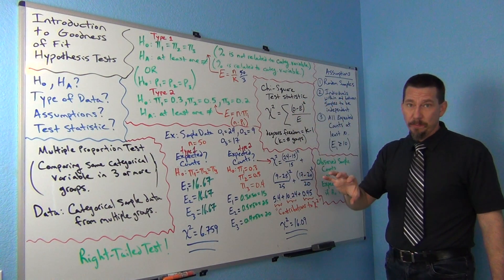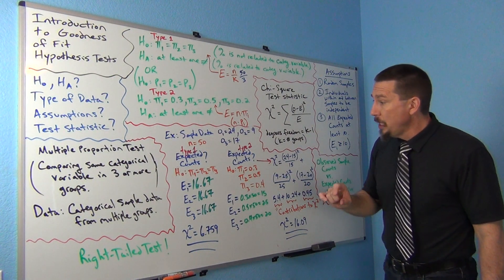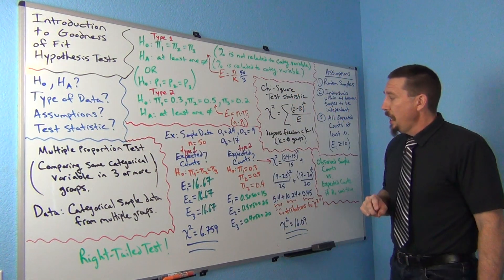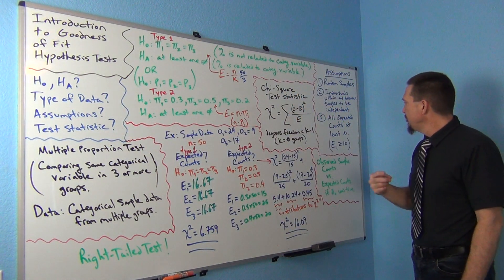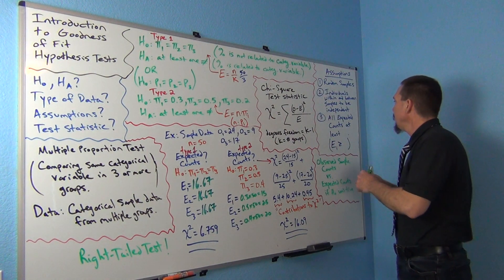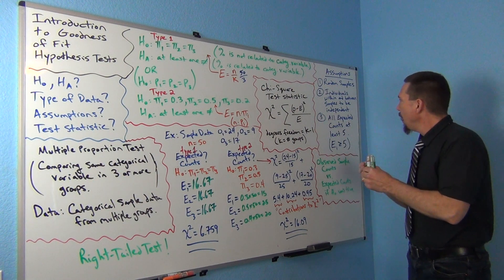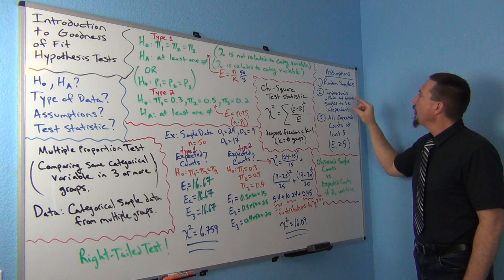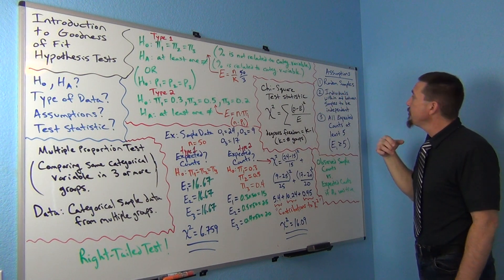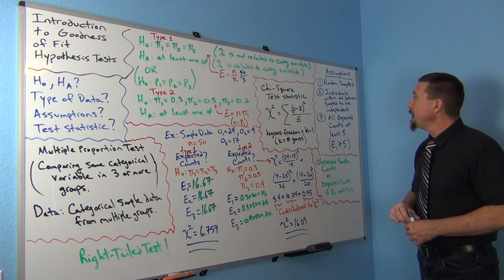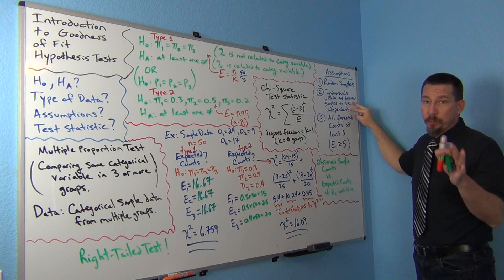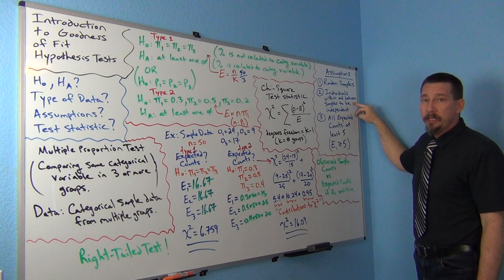All right, now let's look at what are the assumptions. I kind of went out of order today when I did the assumptions. The main thing is that the assumptions, we're going to look at the assumptions now. All right, so let's look at assumptions. We have a random sample. They should have random samples, hopefully, or representative of the population. Very much like the two population proportion test, individuals within and between the samples should be independent.